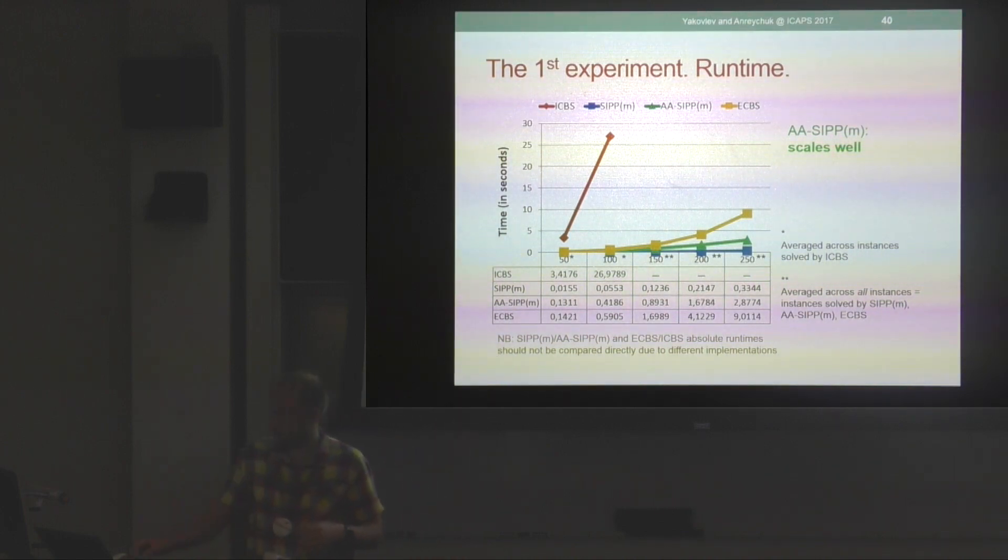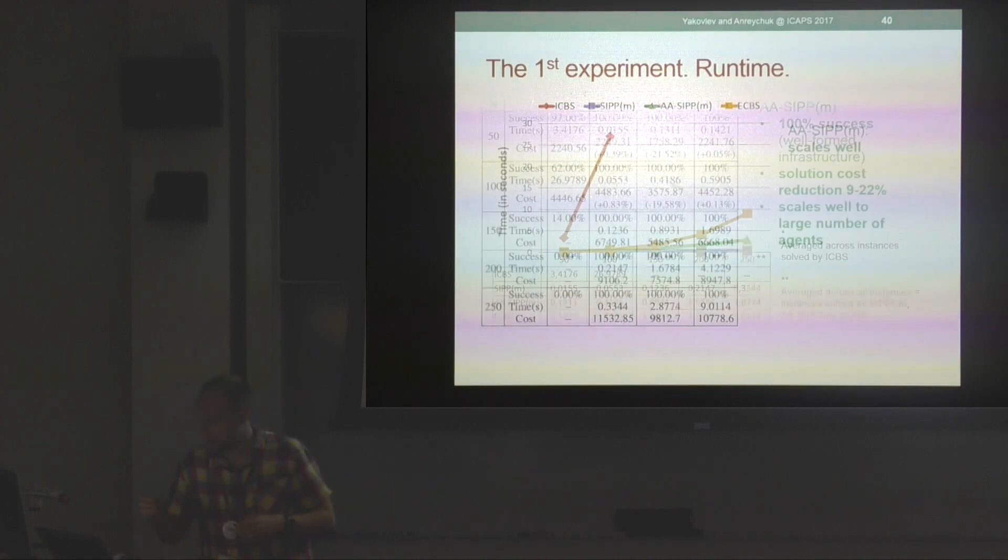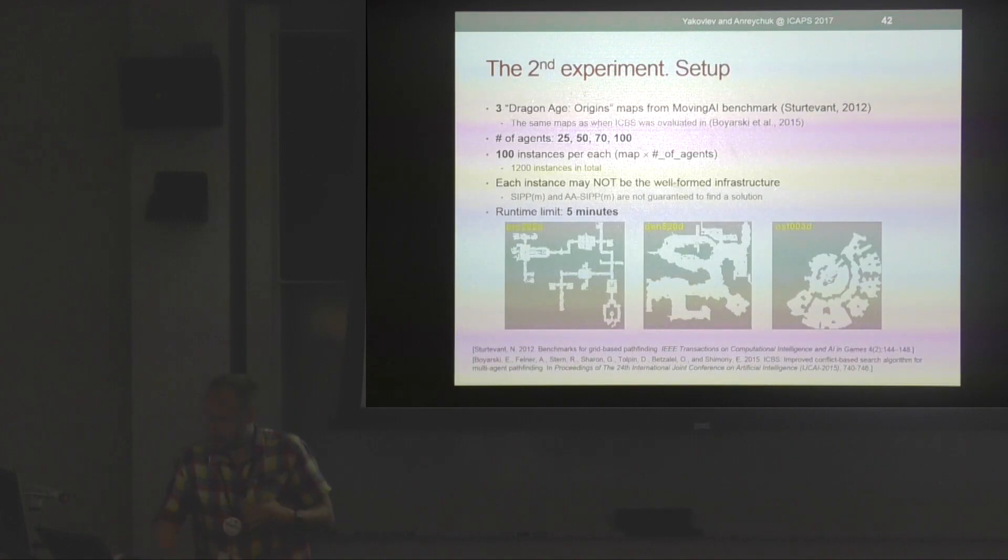In the second experiment, there were three maps from Nathan Sturtevant's collection involved. The reason why we've chosen these maps was that these are the maps used in the community previously by the authors of ICBS. Now the number of agents ranged from 25 to 100, and each instance was not guaranteed to be a well-formed infrastructure. Runtime limit was set to be five minutes again.